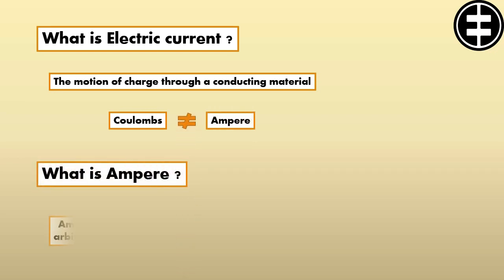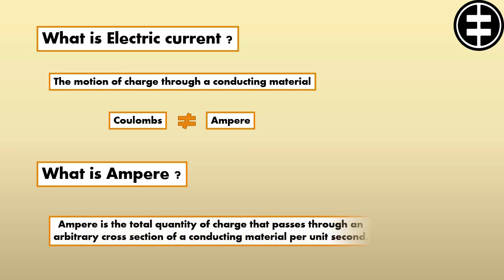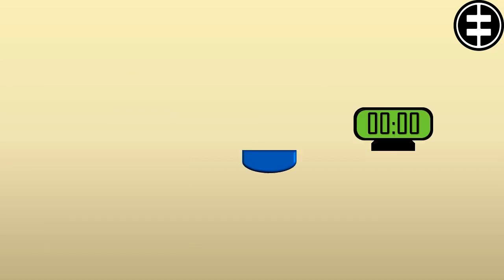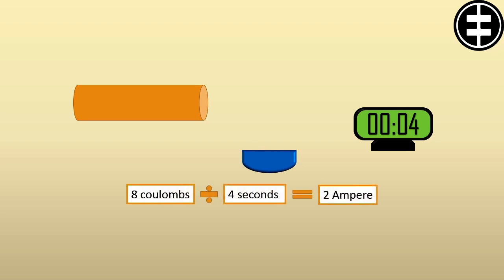So what is ampere? Ampere is the total quantity of charge that passes through an arbitrary cross section of a conducting material per unit second. That means if 8 coulombs passes through a point in 4 seconds, that means current is equal to 2 ampere.